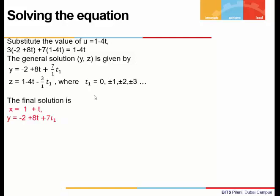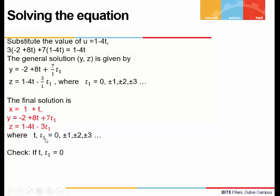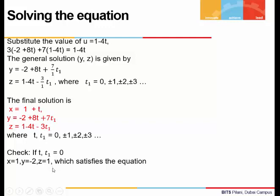Writing all solutions together: x = 1 + t, y = −2 + 8t + 7t₁, and z = 1 − 4t − 3t₁, where t and t₁ can take values 0, ±1, ±2, etc. To verify, setting t = t₁ = 0 gives x = 1, y = −2, z = 1, which satisfies the original equation. By varying t and t₁ we obtain infinitely many solutions.